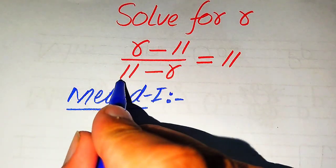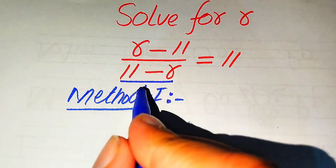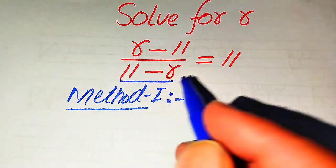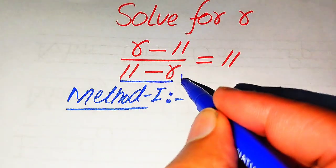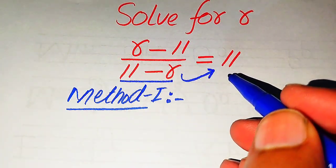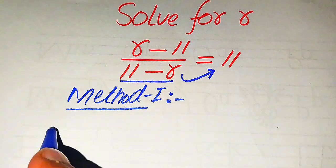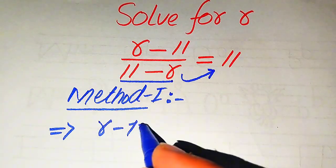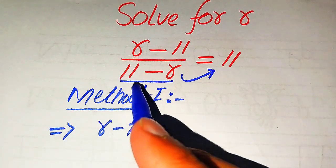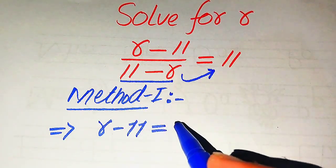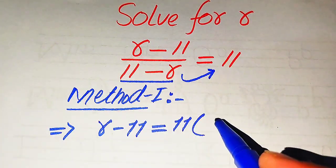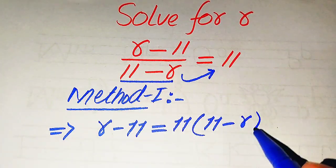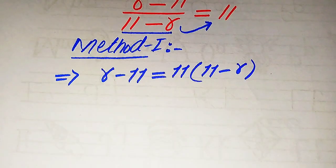Now we move towards the solution using the first method. Here you see that 11 minus r is in the denominator on the left hand side. We need to move this value to the right hand side, so it will be written as r minus 11 equals 11 minus r multiplied by 11.